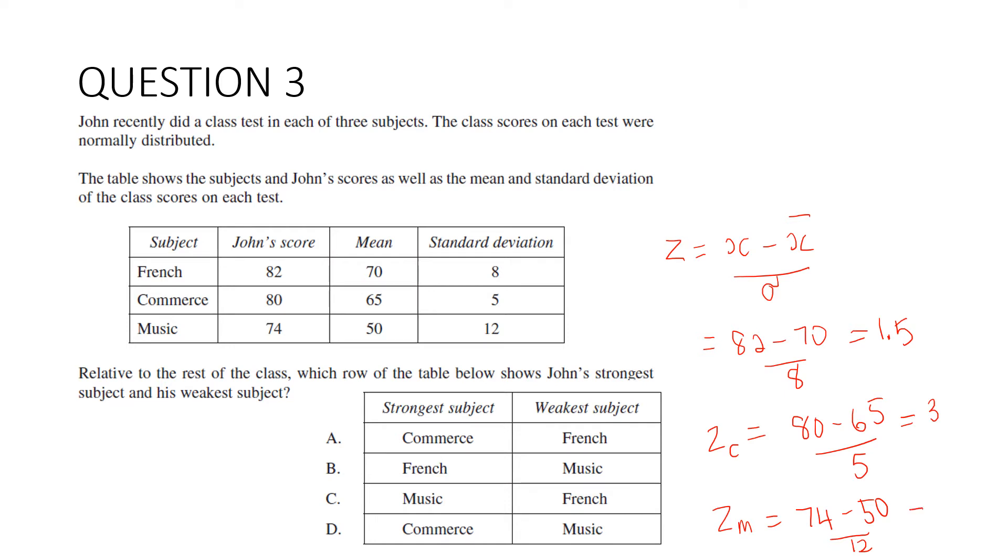So his strongest subject is commerce, 3 standard deviations above the mean. And his weakest subject is French, 1.5 standard deviations above the mean. So which one is that? That is a.